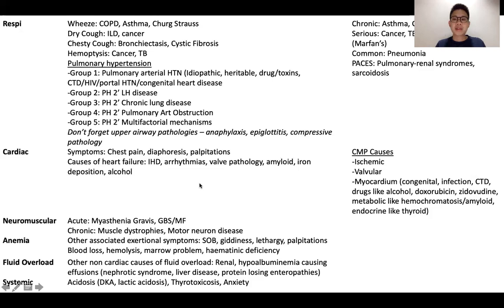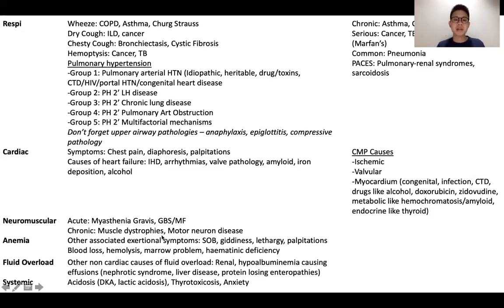Not to forget the neuromuscular group. These patients can have problems with breathing because of muscular weakness, and hence it would be important to look for associated features such as weakness in any distribution or bulbar symptoms. Anemia is an important cause, and it would be important to hunt for other associated exertional symptoms. Not to forget that fluid overload — apart from cardiac causes — renal causes are important, and less commonly hypoalbuminemia causing effusions can also manifest with breathlessness.